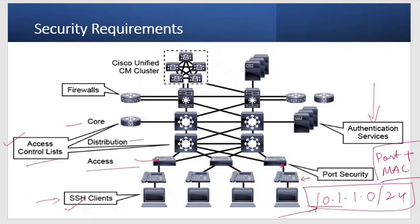We also have authentication servers. For example, you have a CUCM registering all your end devices. When those devices send requests from access through distribution through core to the CUCM, they should be authorized users, verified by authentication servers. It is recommended to have authentication servers in your network so that requests coming into the CUCM or between any two points are authenticated first using usernames and passwords. In Cisco, we have AAA — Authentication, Authorization, and Accounting — as that authentication service.